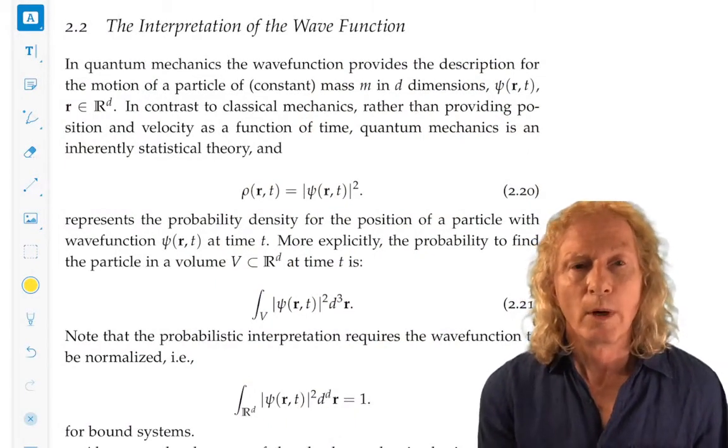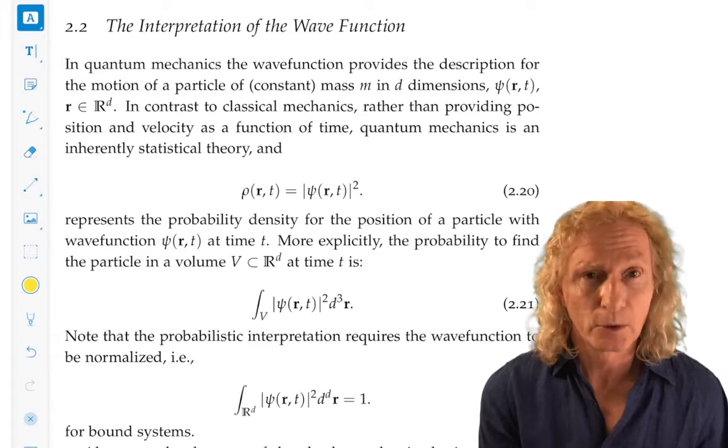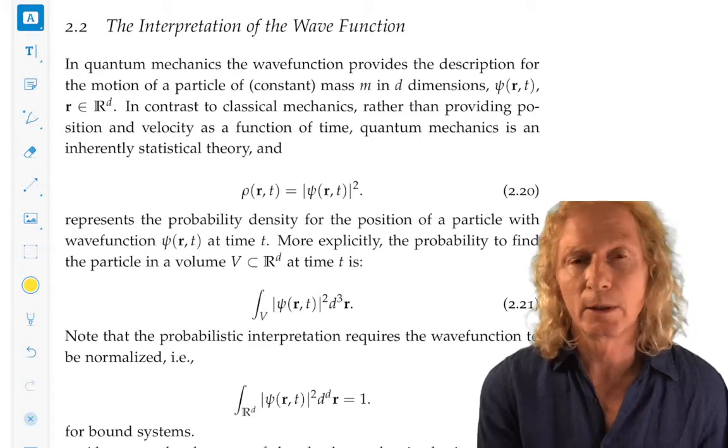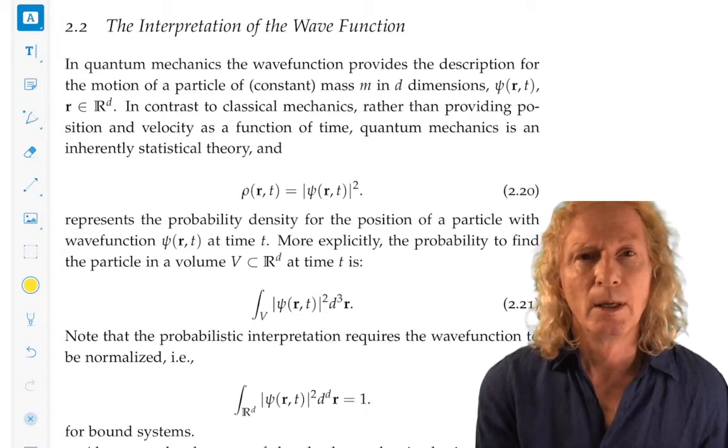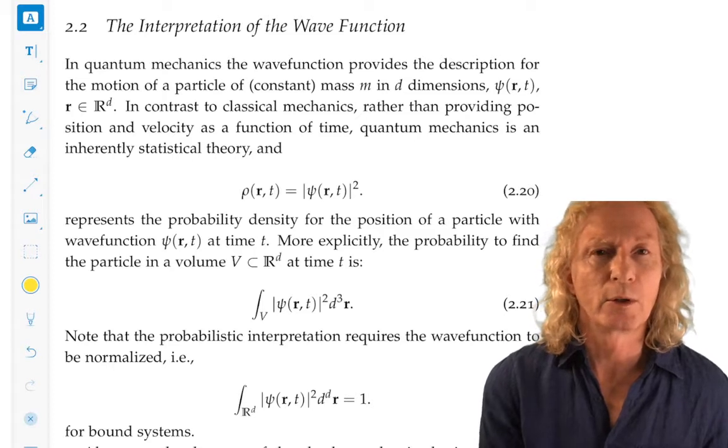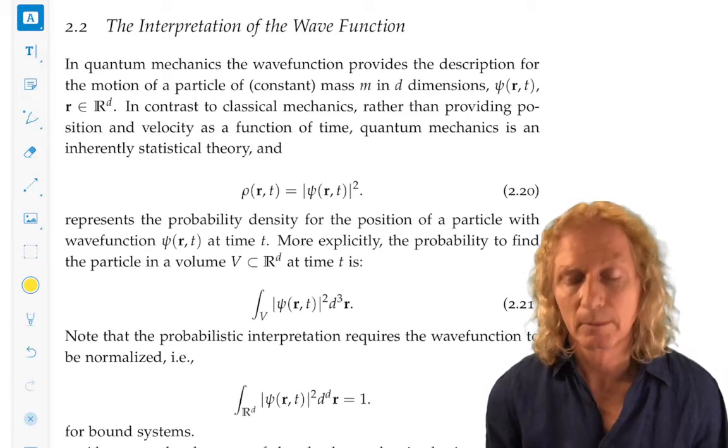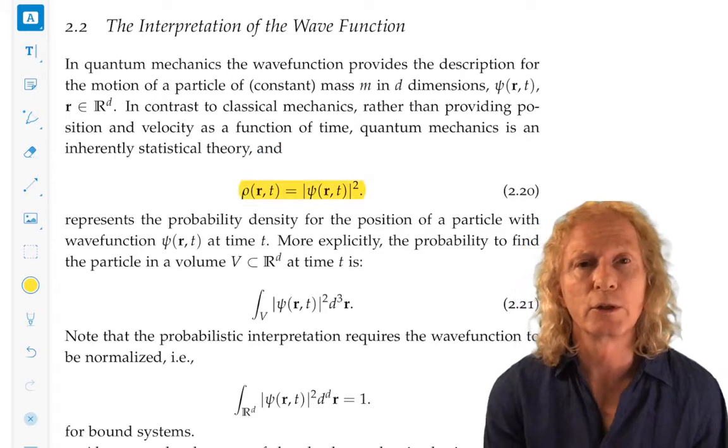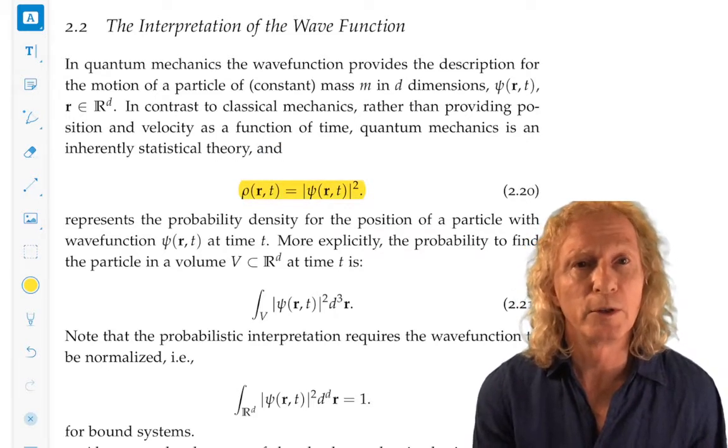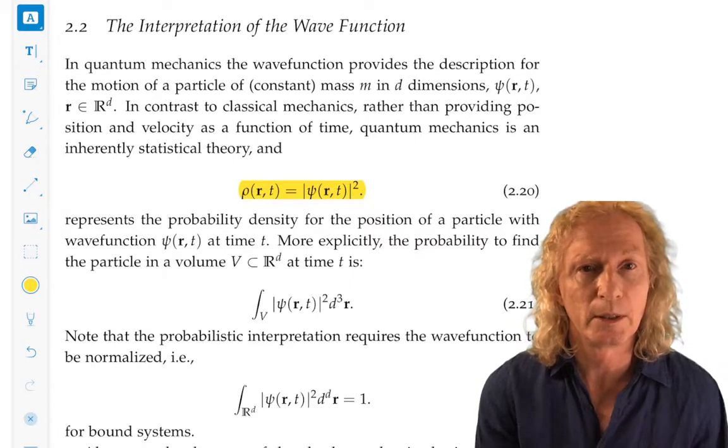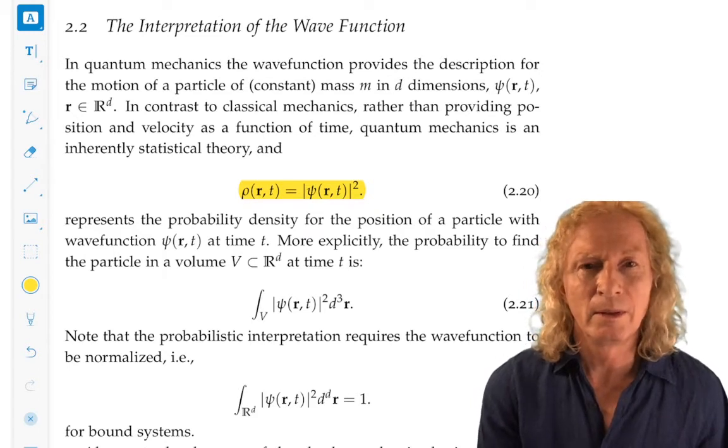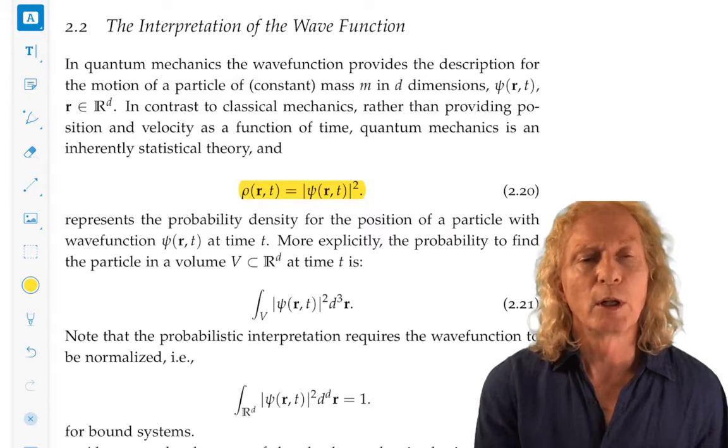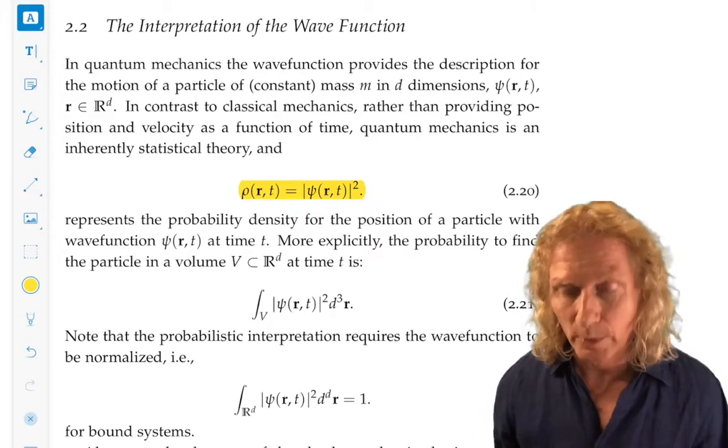Well, quantum mechanics is a statistical theory. I say that now, and we're going to see many examples of why that's the case. The next chapter will bring to the front interesting phenomena when we discuss the quantum theory of measurement. The statistical theory comes about from the interpretation of the magnitude squared of the wave function as a probability density for the position of the particle at time t. This is fundamental.